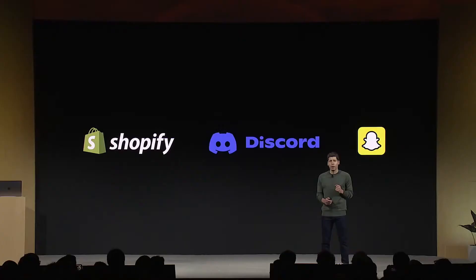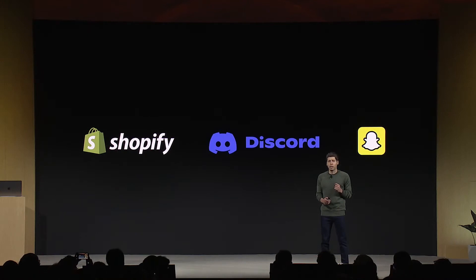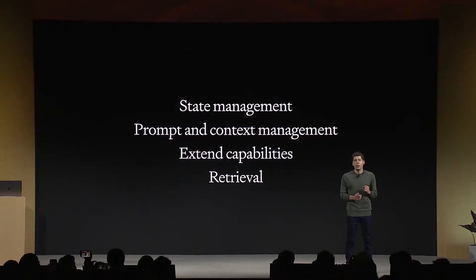Many of you have already been building agent-like experiences on the API. For example, Shopify's Sidekick, which lets you take actions on the platform; Discord's Clyde, which lets Discord moderators create custom personalities; and SnapsMyAI, a customized chatbot that can be added to group chats and make recommendations. These experiences are great, but they have been hard to build — sometimes taking months and teams of dozens of engineers. There's a lot to handle to make this custom assistant experience.